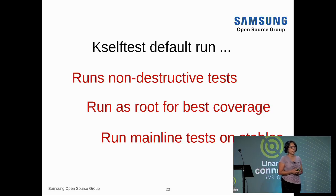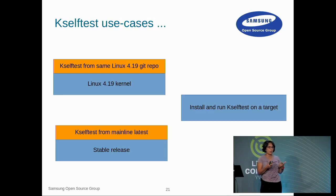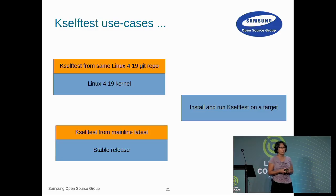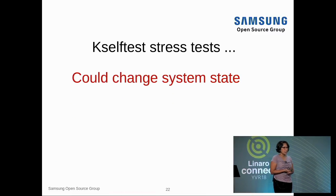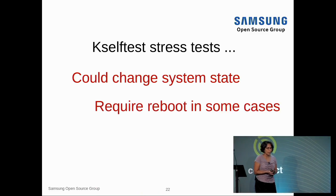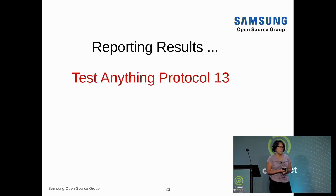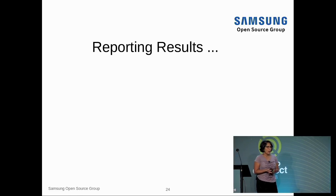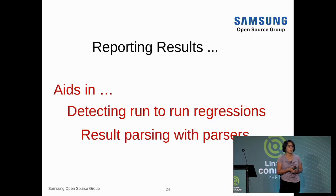What does the default run include? It runs non-destructive tests. Many tests need to run as root — being root gives you the best coverage. I always recommend running the current RC release against stable for best coverage. Use cases include: running on the same release, running on the latest, and install-and-run. We have stress tests that could change system state — those are not in the default run, user beware. We also support the Test Anything Protocol for simple text-based result parsing to help external parsers detect run-to-run regressions.